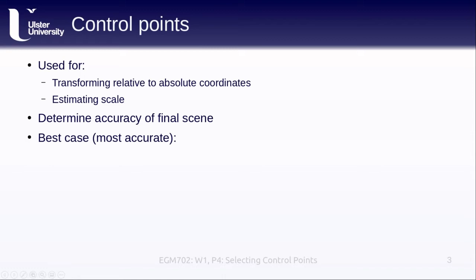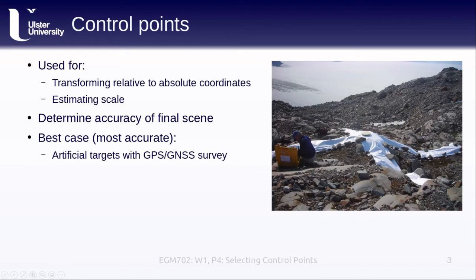In the best case — the most accurate control points we can get — we are using artificial targets, usually with some kind of GPS or global navigation survey. This example from fieldwork in Alaska shows large Tyvek crosses placed out in the field. We do a GPS survey on the center of the cross, and in the images we acquire we'll know the exact location of this cross to less than 10 centimeters, which will give us a highly accurate DEM.